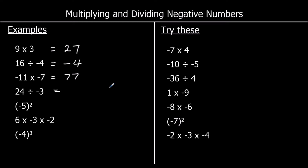The fourth one: a positive divided by a negative gives a negative answer, and 24 divided by 3 is 8, so we've got negative 8. For the next one, negative 5 squared means negative 5 times negative 5. A negative times a negative is a positive, and 5 times 5 is 25.